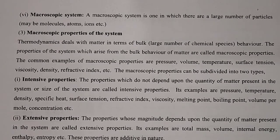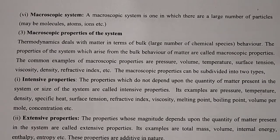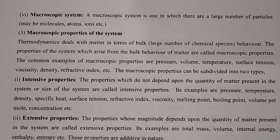Thermodynamics deals with matter in terms of bulk — meaning a large number of chemical species. The properties of the system which arise from this bulk behavior of matter are called macroscopic properties. Common examples of macroscopic properties are pressure, volume, temperature, surface tension, viscosity, density, refractive index, and many more. These macroscopic properties can be subdivided into two important types asked in many schools: intensive property and extensive property.